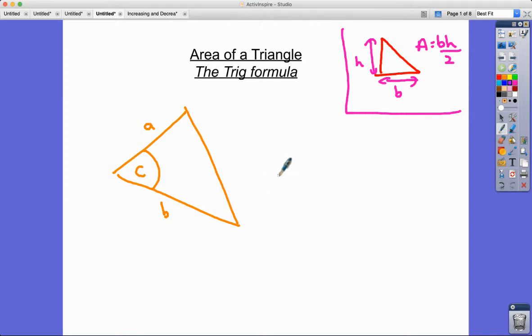Then we can use a formula that area is half AB sine C. This always works whether you've got a right-angle triangle or a non-right-angle triangle. So let's go and see that in action.